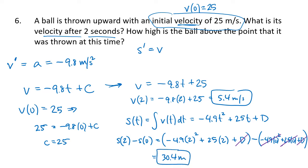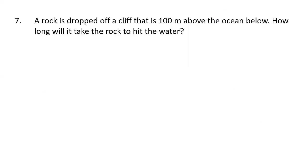The key principles for gravity motion problems: the derivative of velocity is acceleration, and the derivative of position is velocity. Now let's apply these ideas one more time. A rock is dropped off a cliff that is 100 meters above the ocean below — how long will it take the rock to hit the water?